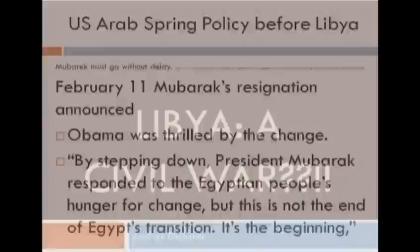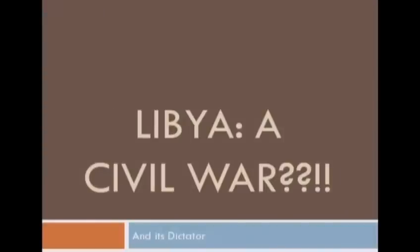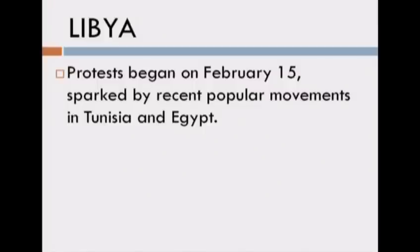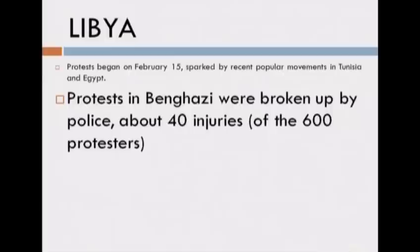How about Libya? Is this a civil war, and if it is, what about outside intervention? I want to carefully go through Libya because I want to make an argument about just war theory. The protests begin in Libya on February 15th, sparked by what was going on in Tunisia and Egypt — the domino process. The protests begin in Benghazi, broken up by the police, about 40 injured. It's important to talk about Libya as a product of the European construct — Libyan borders were literally drawn by outside powers: the Ottoman, then Italian, French, and British influence.